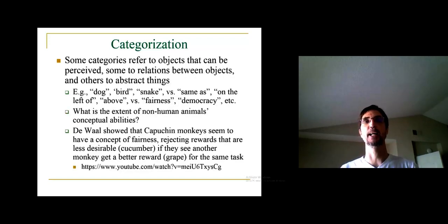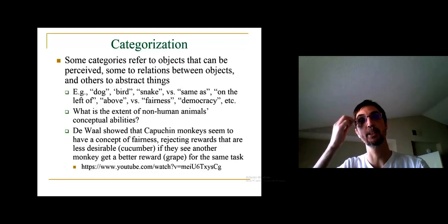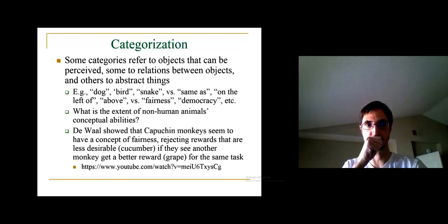The confusing thing about categorization is that, at least in the case of humans, the categories that we can deal with range quite broadly. Some categories refer to things that are easily perceived—they're more concrete. Some categories refer to relations between objects, and other things are even more abstract than that. For example, the categories of dog, bird, and snake are perceivable concrete categories, while same, as, on the left of, above would be relational categories. They describe relations between objects. And then we have things like fairness, democracy, justice—these would be more abstract categories.